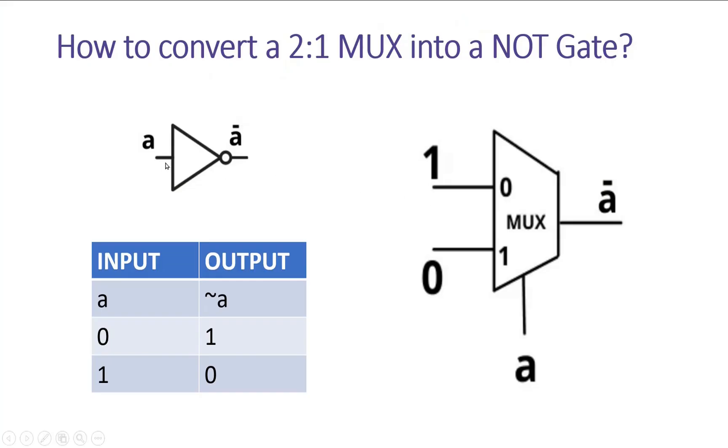This is a NOT gate. Its input is a and output is a bar. And this is the truth table of a NOT gate.